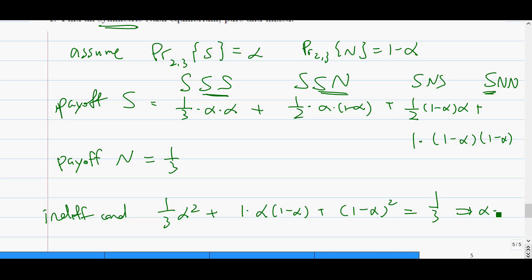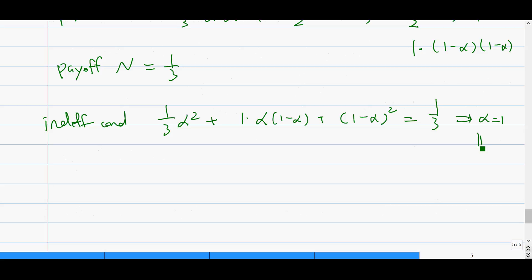So solving this gives me alpha equal to 1, which means this already implies there is no mixed strategy Nash equilibrium that's symmetric. Because as you saw, if this happens, indifference method doesn't work. It means that there is no Nash equilibrium where both of the people mix with the same probability. So we can conclude that.